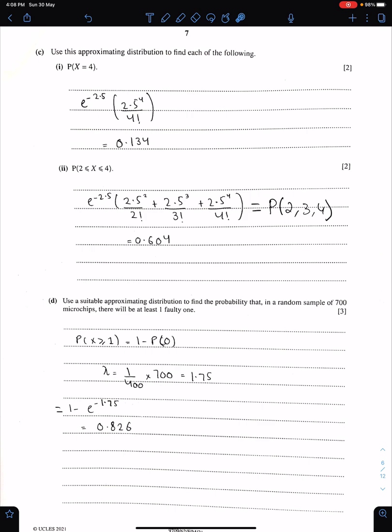Part C: Use this approximating distribution to find each of the following probability X equals 4. This is simple. You just need to use the formula of Poisson distribution with lambda 2.5 and give your answer up to three significant figures. Then we need this probability. This is also very simple, 2, 3, 4. We just need to find the probabilities of these three numbers with the help of Poisson distribution. And give your answer up to three significant figures.